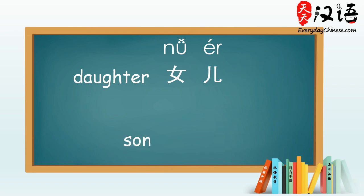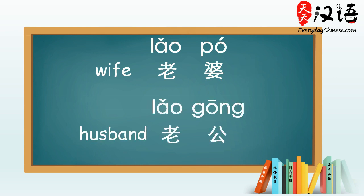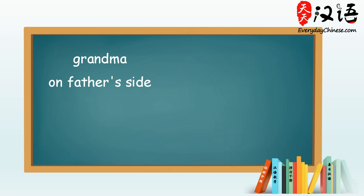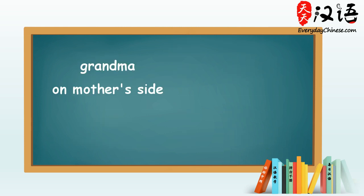The most common family members include: Father 爸爸, Mother 妈妈, Daughter 女儿, Son 儿子, Wife 老婆, Husband 老公.